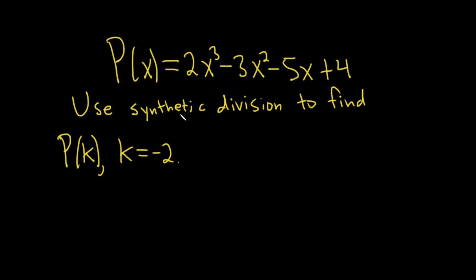Hello. In this problem we have a polynomial given by P(x) = 2x³ - 3x² - 5x + 4.